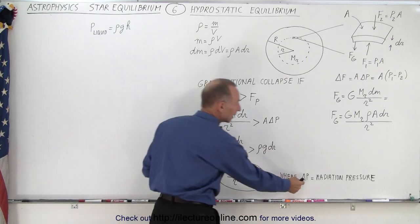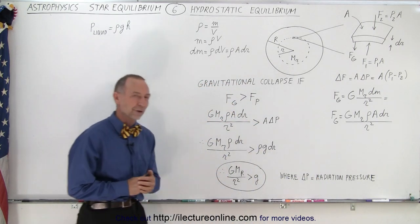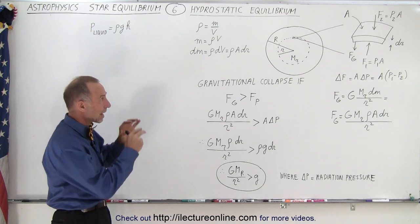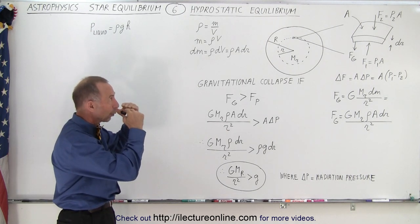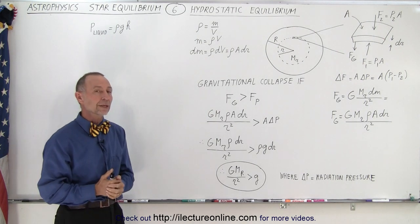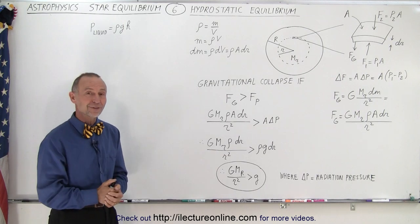And so delta p then is considered the radiation pressure in this example. So here we have a neat little way of looking at inside the star, what is the hydrostatic equilibrium? And of course, that's reached when these two forces become equal. And that is how it's done.